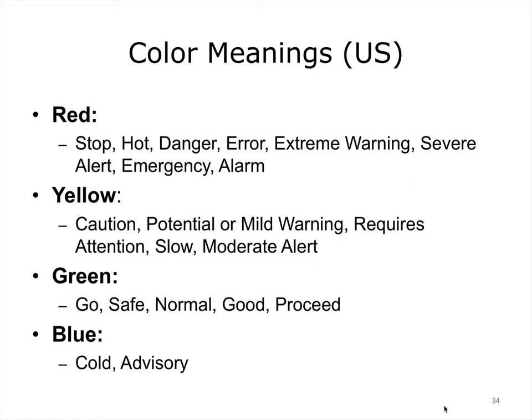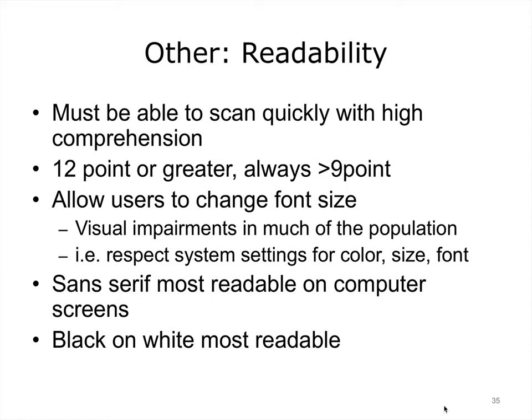Here are the color meanings in the United States. Color meaning can vary between different cultures, so be aware of this if dealing with patient populations from other places. Red is used for alerting users to abnormal values, danger, and emergencies. Yellow is used to call attention to information — it is one of the most eye-catching colors and can mean intermediate levels of danger or concern. Green generally indicates safety, permission to go ahead, normal or good range. Readability ensures that users can scan interfaces quickly with good comprehension, an important factor for clinicians under time pressure. Systems must respect user settings for font size or color to accommodate those with visual impairments. Sans-serif fonts are most readable on computer screens, and black on white is generally most readable.